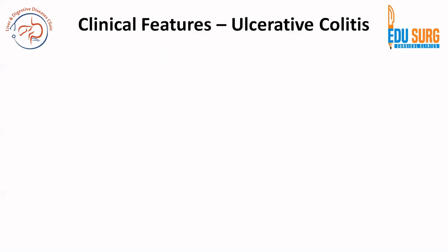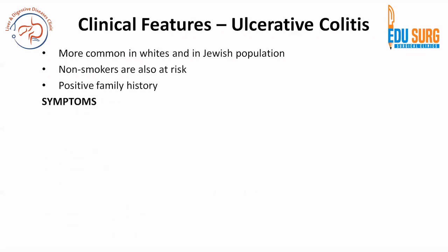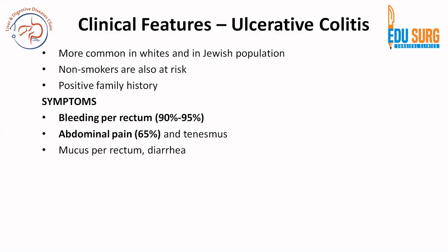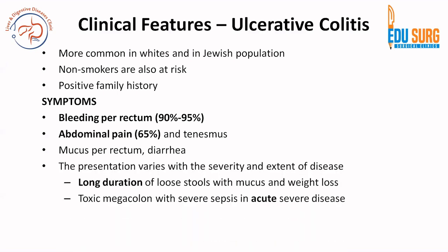Coming to the clinical features of ulcerative colitis: it is more common in whites and the Jewish population, and non-smokers are also at risk. Patients do have a positive family history. In terms of symptoms, bleeding per rectum is the most common, seen in 90 to 95 percent of cases. Abdominal pain is seen in 65 percent of cases, and tenesmus is also present. Patients can also have mucus per rectum and diarrhea.